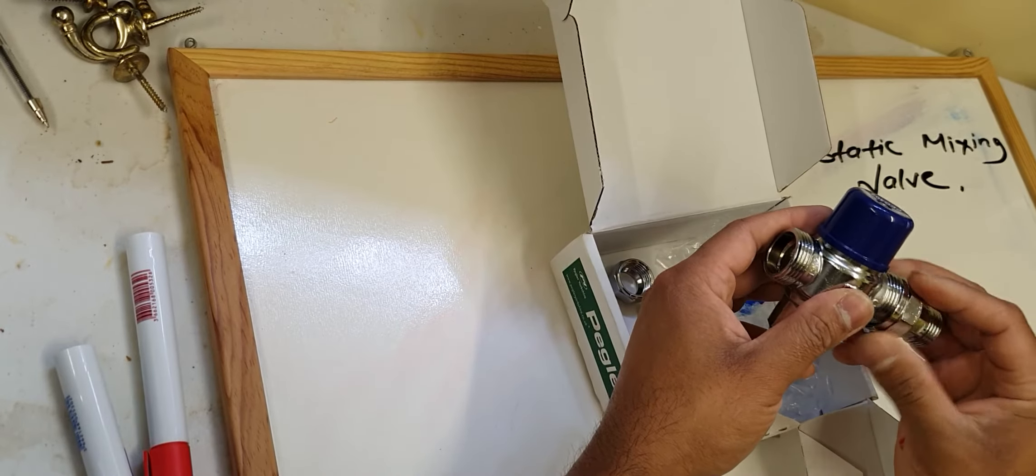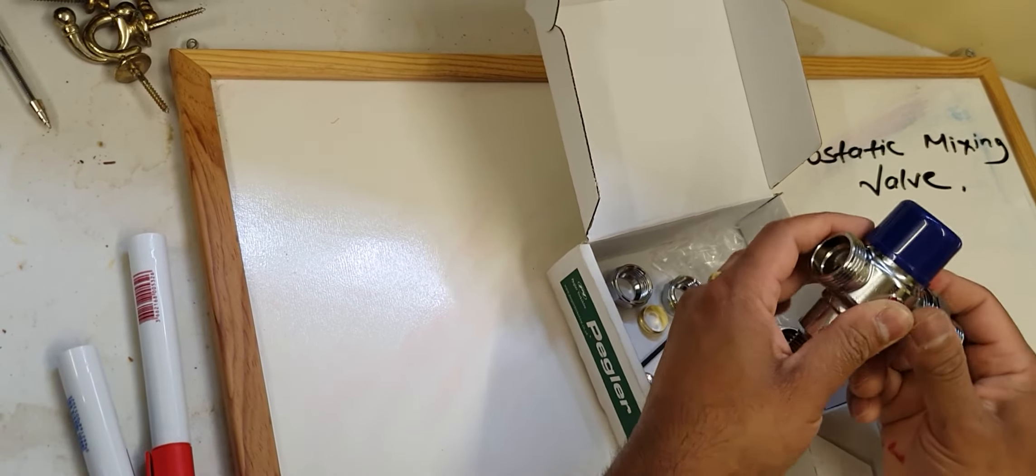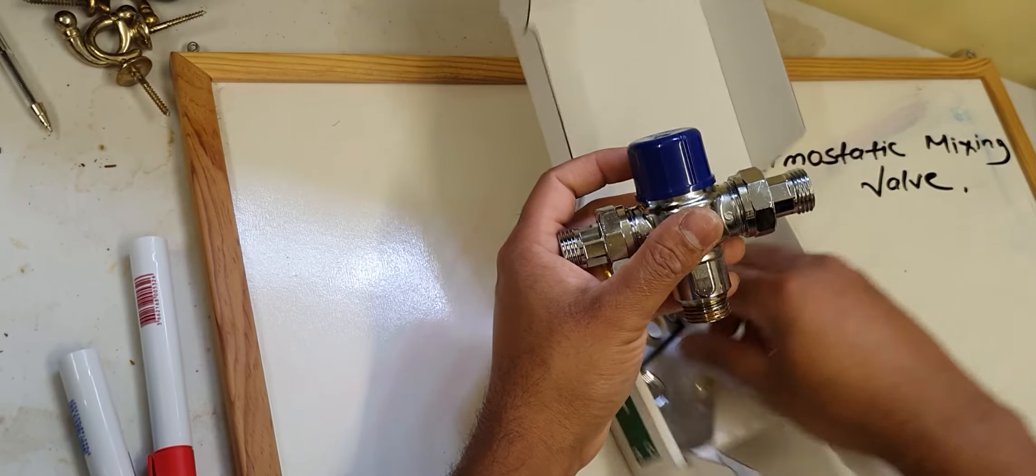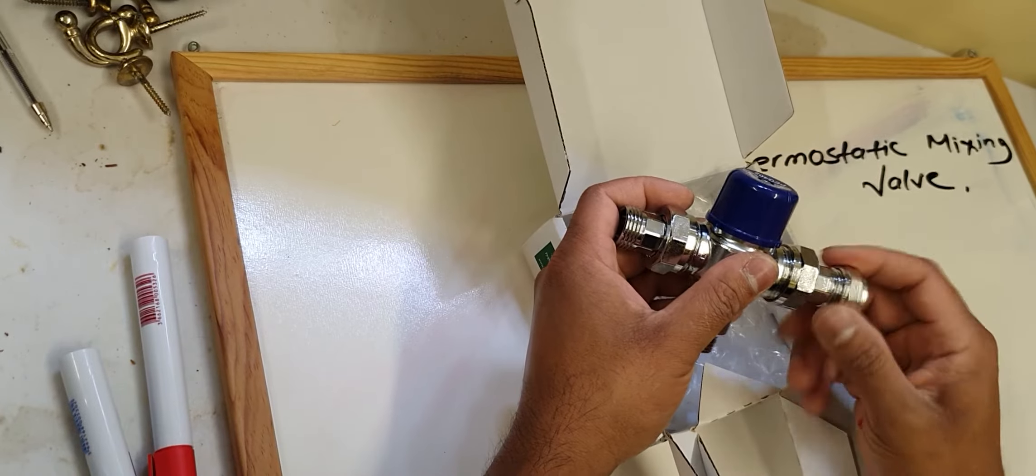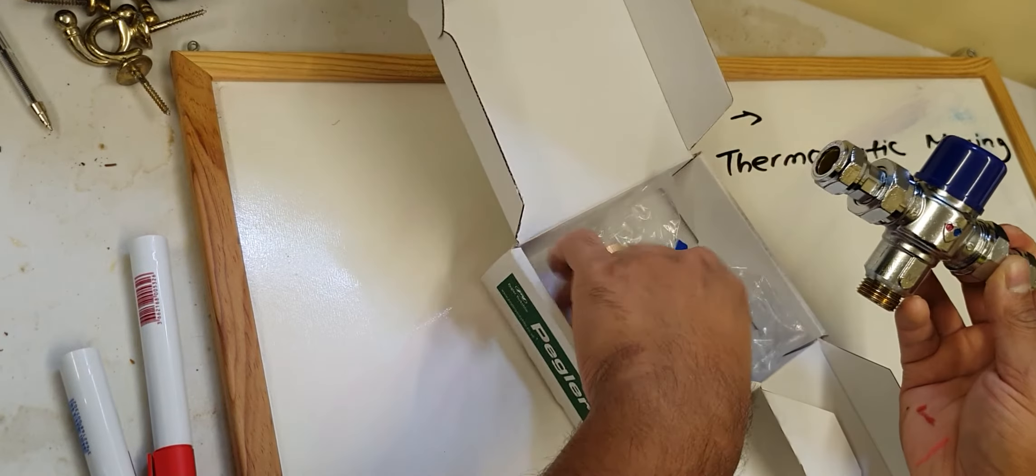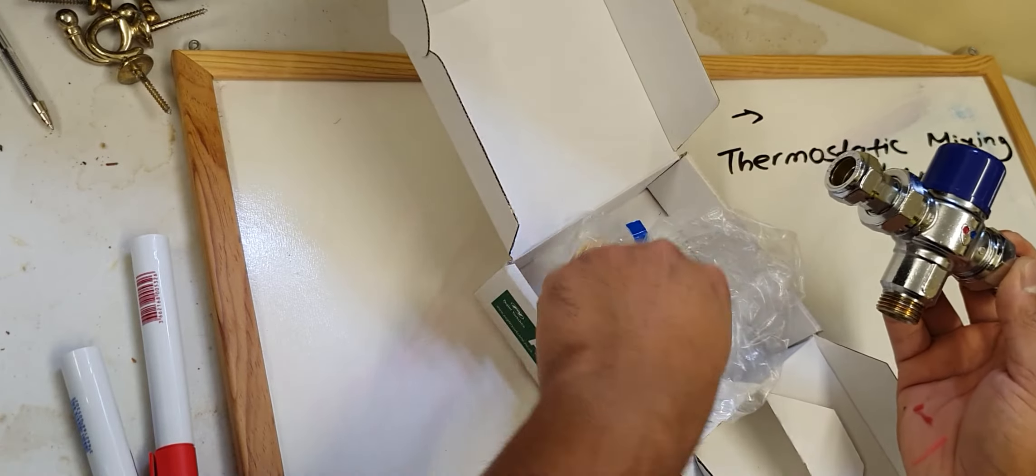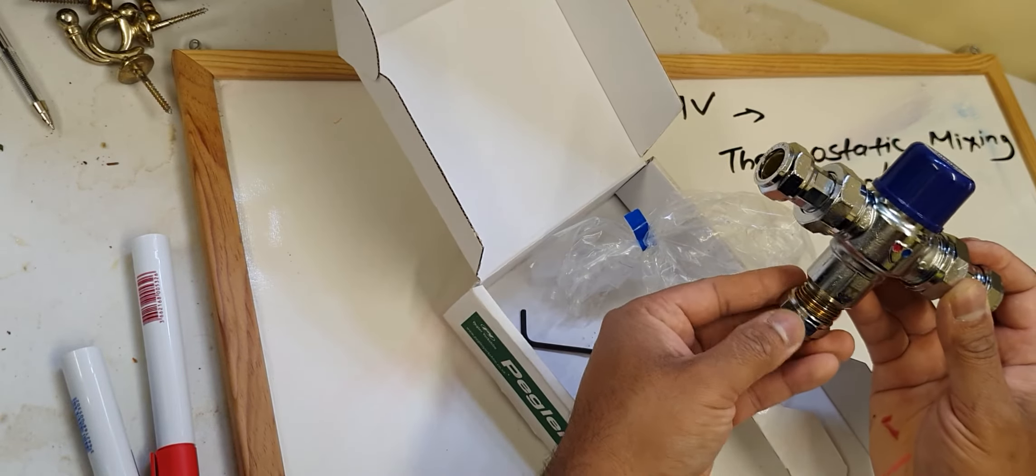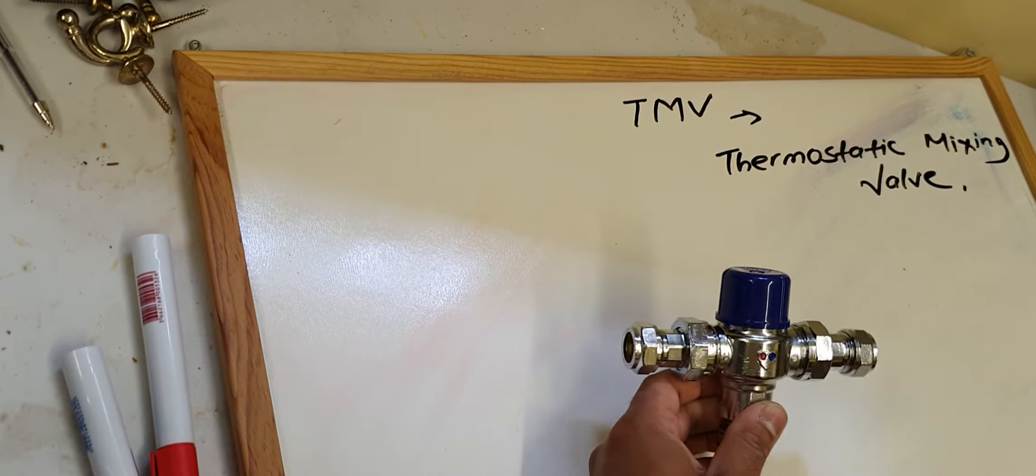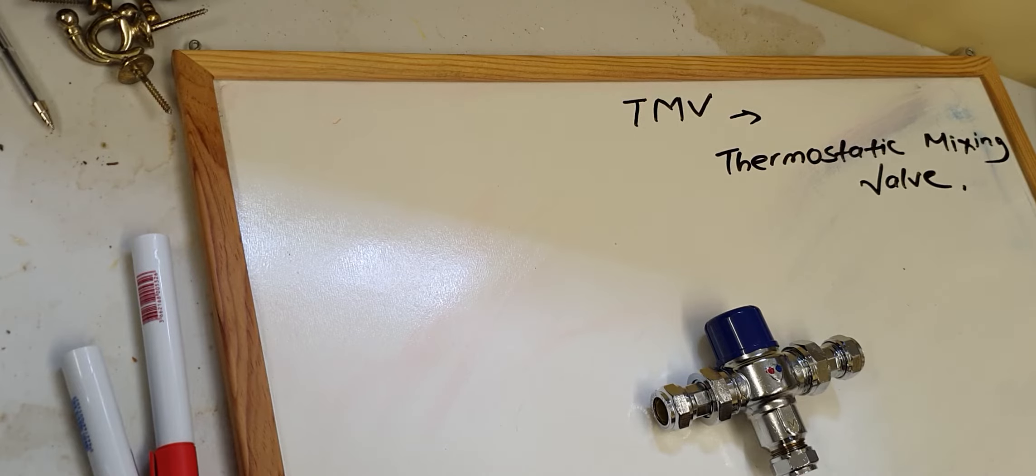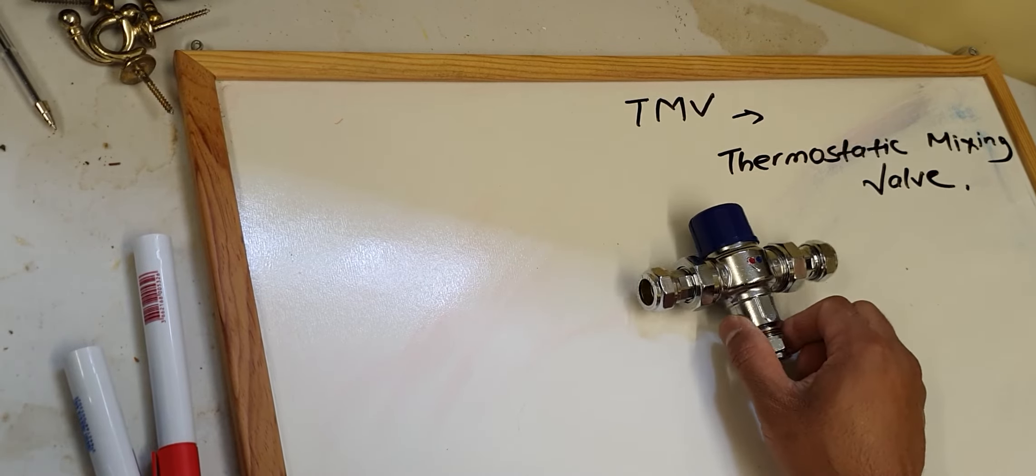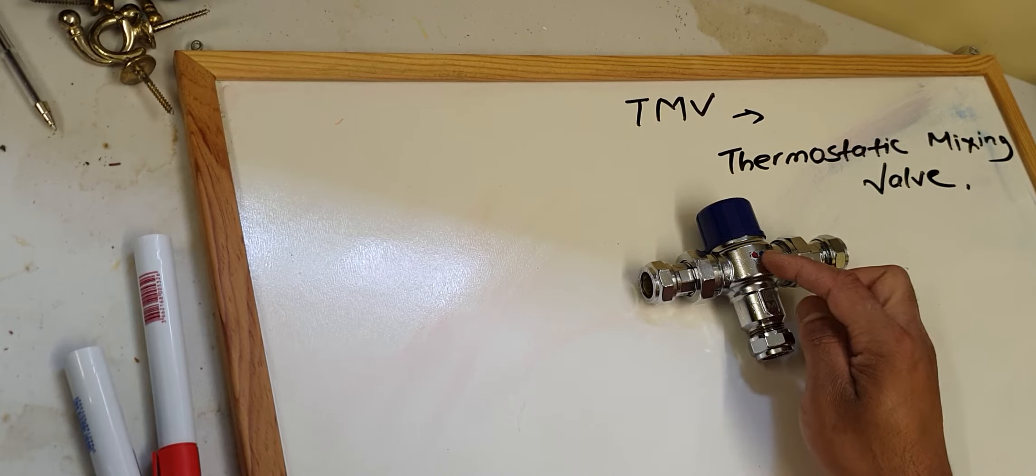These are the fittings and how it comes. This TMV is for 15mm. This is how it looks like. The cold water gets into the TMV from this side, hot water from the boiler or heater gets in from this side. It blends together and gives you the temperature around 40 degrees Celsius from this side.